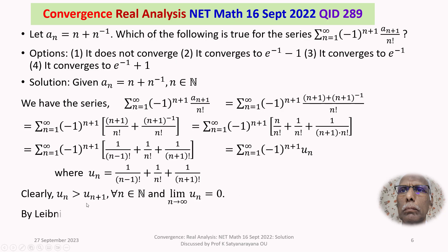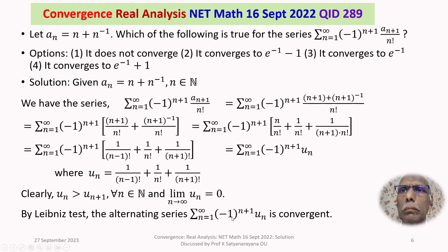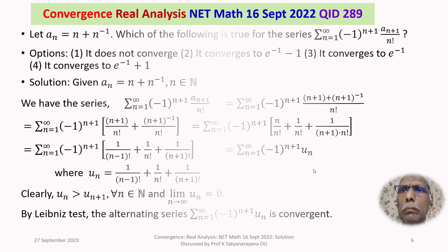By the Leibniz test, the alternating series sigma n=1 to infinity of (-1)^(n+1) * uₙ is convergent. So Option 1, which says it does not converge, is not true. The series does converge. We now need to find what it converges to — that is, we must find the sum of the series, which we will do next.